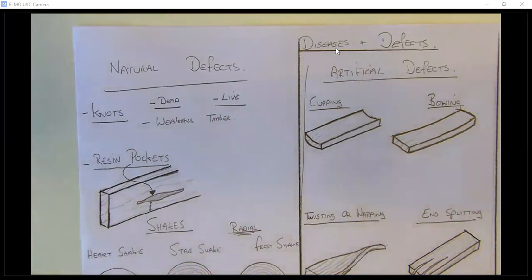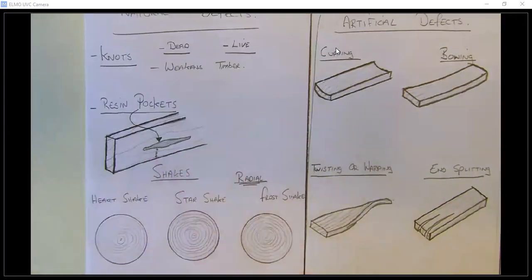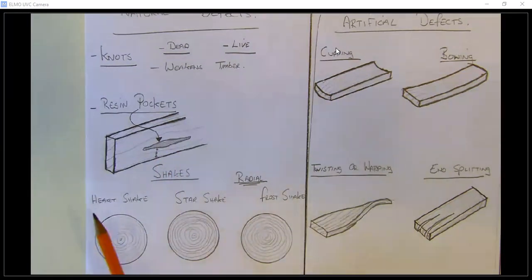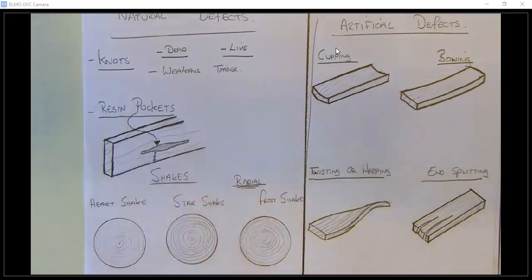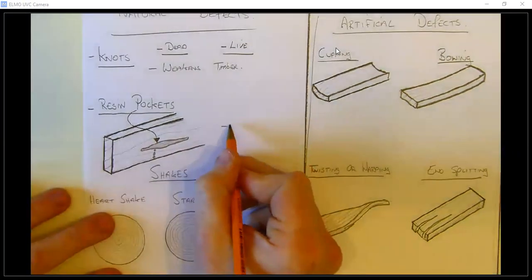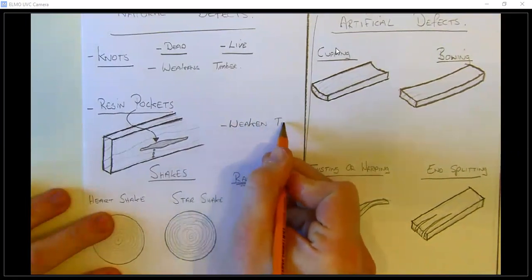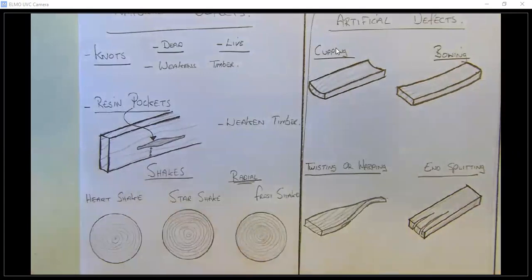The next thing we're going to look at is resin pockets. Resin pockets are small cavities in the wood that are full of resin. If you've come across wood and there was a sticky honey-like substance on your hand, that's resin. These pockets are often hidden from view within the trunk of the tree, and it's only when you convert the timber into planks that the resin pockets become visible and you can see the resin leaking out. Again, holes in the timber full of resin that will leak out — this will weaken the timber. There's not really much you can do about these; they're all natural.